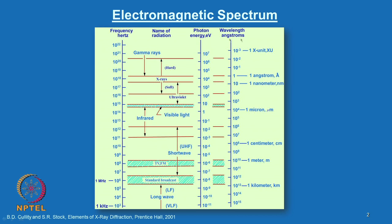Now look at the electromagnetic spectrum which you are already familiar with. We are going to concentrate only on X-rays, where the range is around 10⁻² to 10² angstroms. The corresponding photon energy is in electron volts, and X-rays are classified as hard X-rays or soft X-rays depending upon their penetrating capability and wavelength.